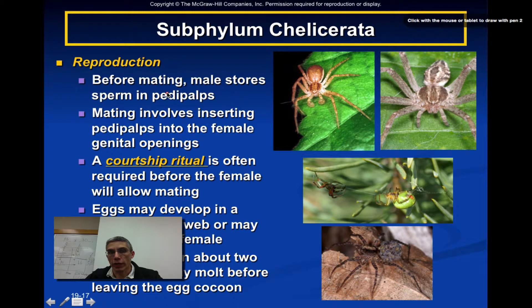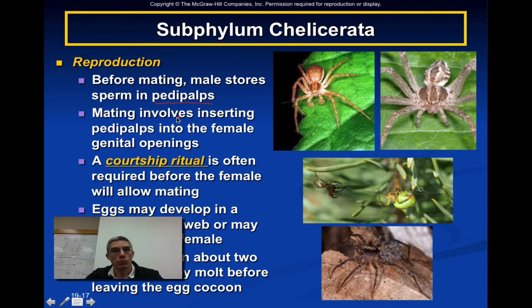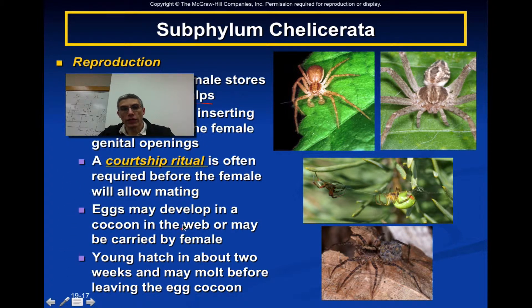Reproduction in this order can be pretty sophisticated. Before mating, the male stores sperm in the pedipalps. In species with elaborate courtship, mating may involve a courtship ritual before he inserts his pedipalps into the female's genital openings. The eggs may develop in a cocoon, in a web, or be physically carried by the female. The young hatch in about two weeks, and many will molt before leaving the egg cocoon.